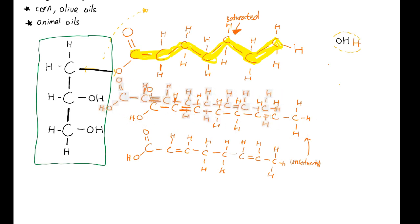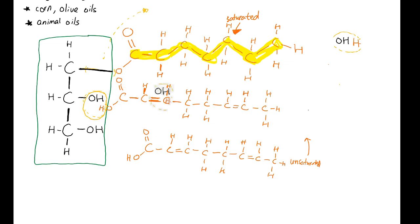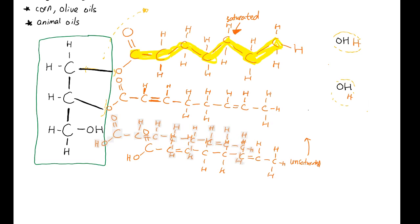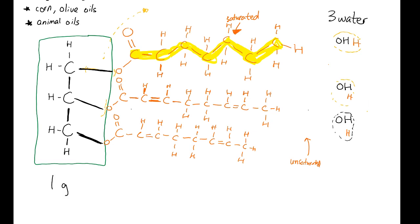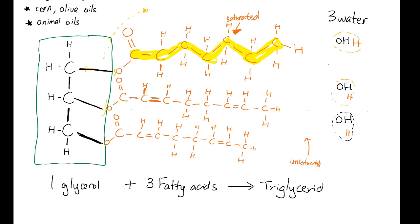I'm going to do the same thing for the unsaturated fatty acid — move it all the way to the glycerol and take out one H and one OH, forming a water molecule. A covalent bond forms between the carbon and the oxygen. I do the same thing again for the third fatty acid: move it closer, remove the hydroxyl and hydrogen as water, and form a covalent bond. So when three fatty acids combine with one glycerol to form a triglyceride, three water molecules are released through dehydration synthesis.